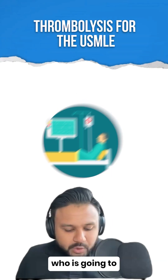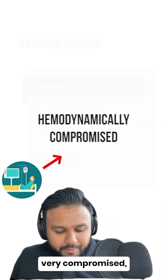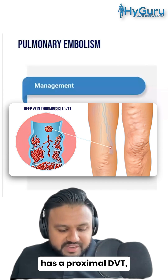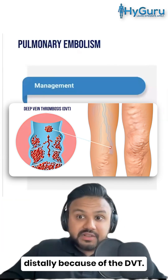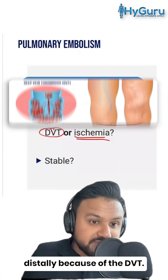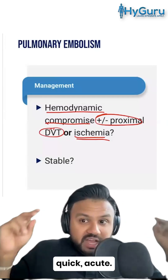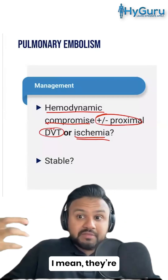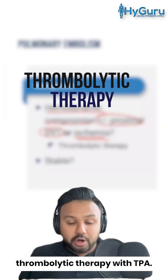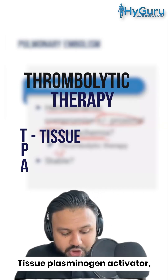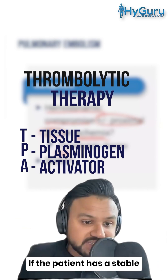Let's say you have a patient who is going to be hemodynamically very compromised, has a proximal DVT, or maybe there are signs of ischemia distally because of the DVT. What's your management there? Well, it has to be something quick, acute — they're on the verge of death. So that's where you do thrombolytic therapy with TPA, tissue plasminogen activator, which bursts up clots.